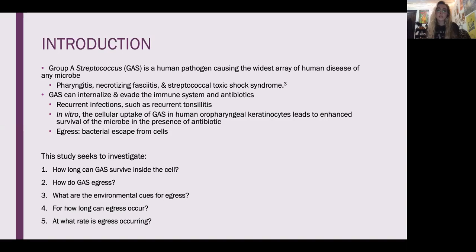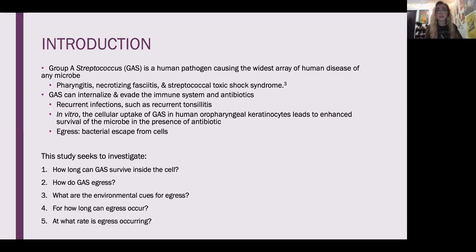In vitro, the cellular uptake of group A strep in human oropharyngeal keratinocytes, or human throat cells, what we were using here, leads to enhanced survival of the microbe in the presence of antibiotics. Egress, as I'll discuss, is the bacterial escape from human cells after they have been exposed to antibiotics.